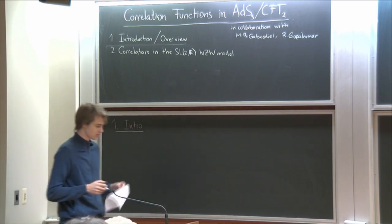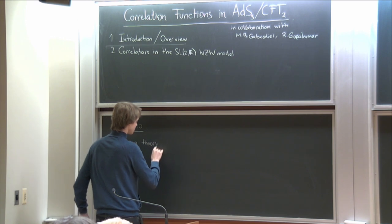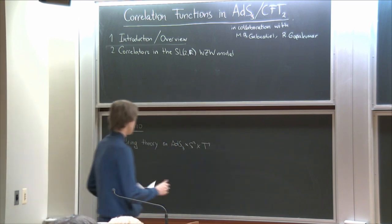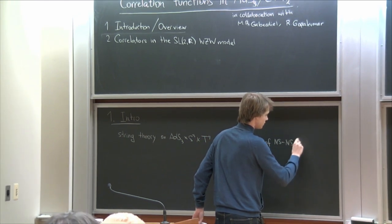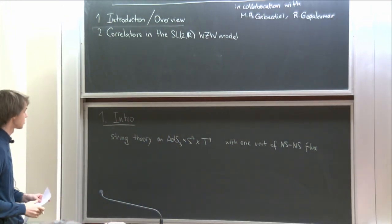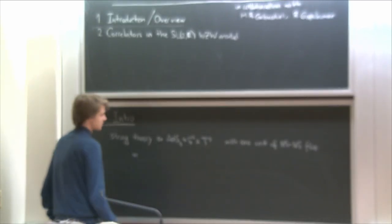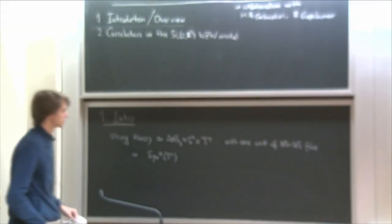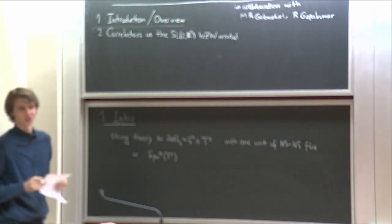Recently we made some conjecture based on a lot of earlier work: if you take string theory on ADS3×S3×T4 background with exactly one unit of NS flux and no unit of RR flux, there is some way of making sense of this theory. The claim is that there is an exact holographic dual of it, which is the symmetric product of T4. The upgrade with respect to earlier statements is that now there is an equal sign here, not only a 'same moduli space' sign.